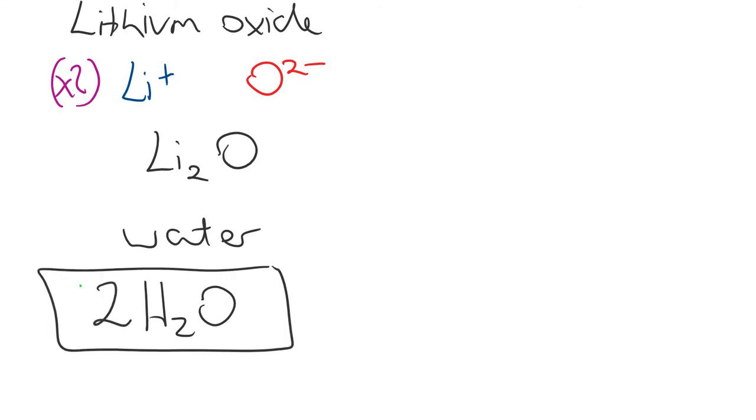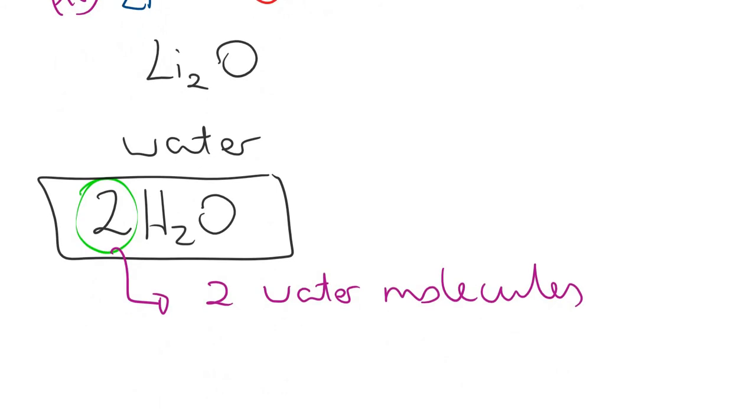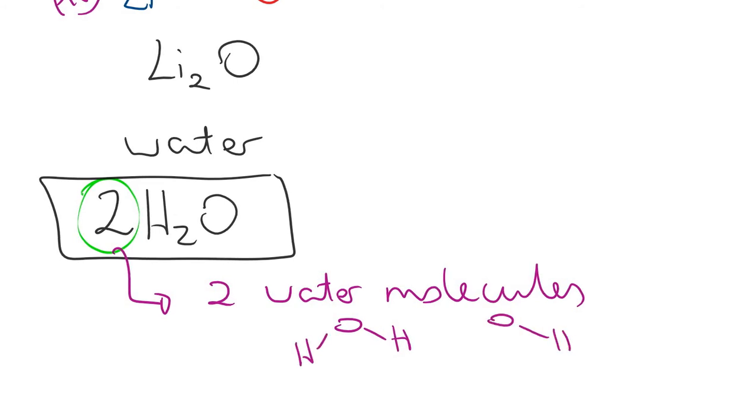Just to go back to the original. We're going to have a look at what these numbers mean. Well, the large two means that we've got two water molecules there, or two moles of water molecules. We'll look at that a bit later.